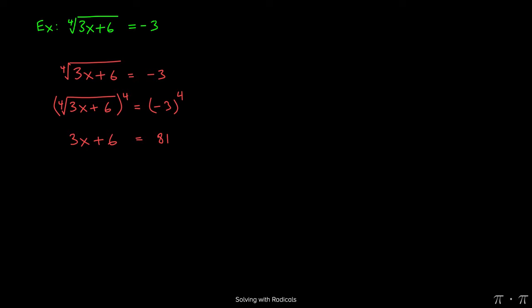This results in a linear equation, 3x plus 6 equals 81, which we can solve by subtracting the 6 over to the right-hand side. 81 minus 6 gives us 75.